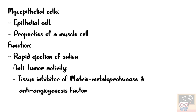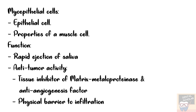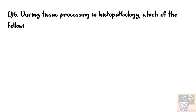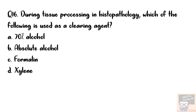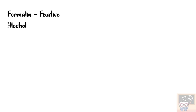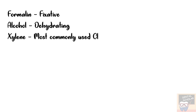Question number 16: During tissue processing in histopathology, which of the following is used as a clearing agent? Options are 70% alcohol, absolute alcohol, formalin, and xylene. The answer is option D, xylene. Formalin is used as a fixative, alcohol acts as a dehydrating agent, and xylene is the most commonly used clearing agent.